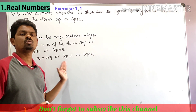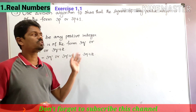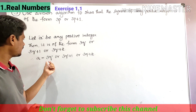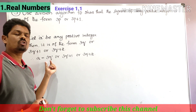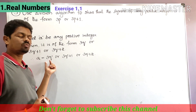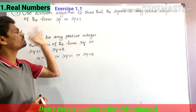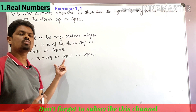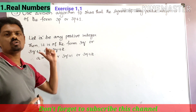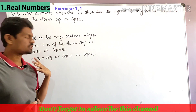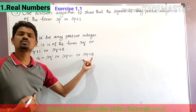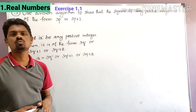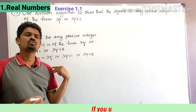In these three cases, we have to show that the square of any positive integer is either of the form 3p or 3p plus 1. By taking the first case, a is equal to 3q, we have to show a squared is of the form 3p or 3p plus 1. By taking a equal to 3q plus 1, we show a squared is 3p or 3p plus 1. By taking a equal to 3q plus 2, we show a squared is of the form 3p or 3p plus 1.